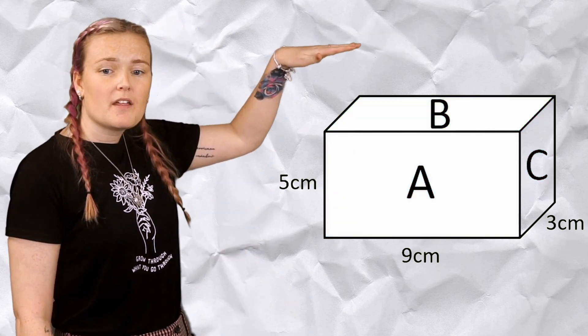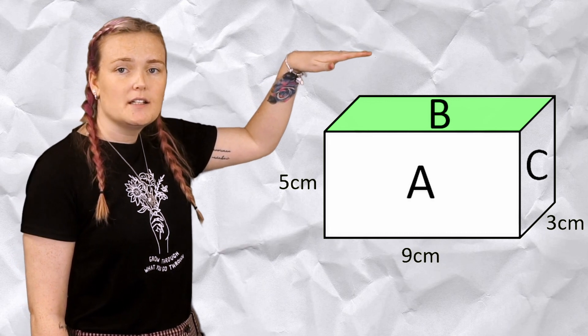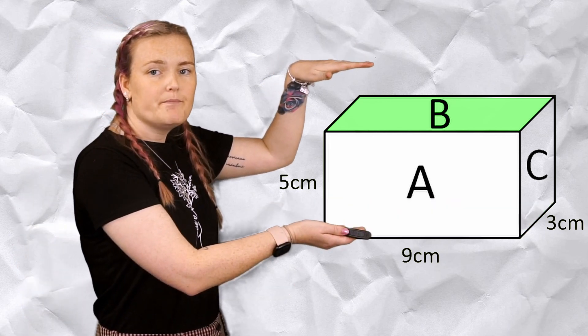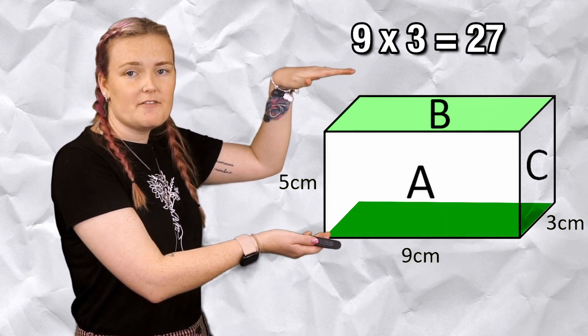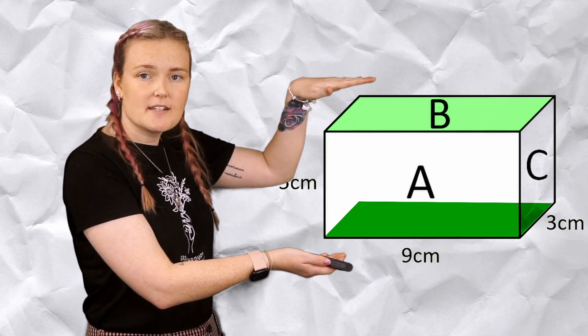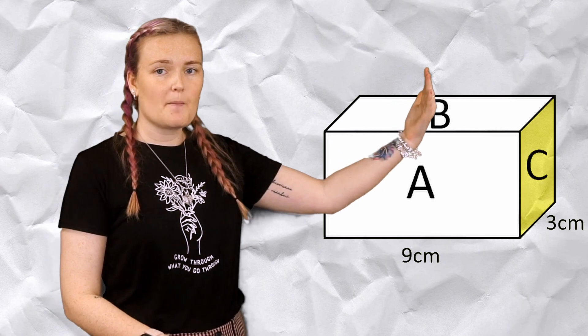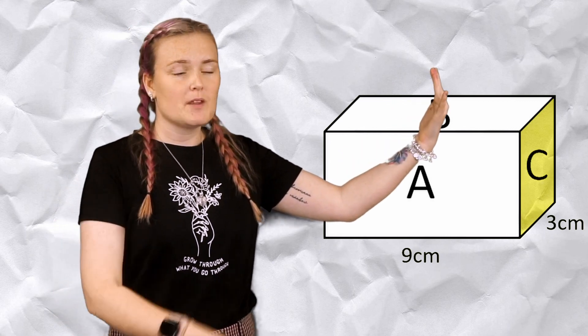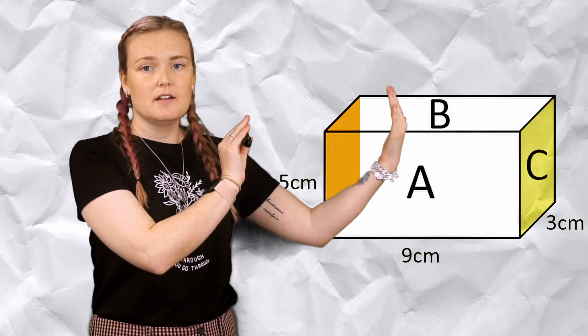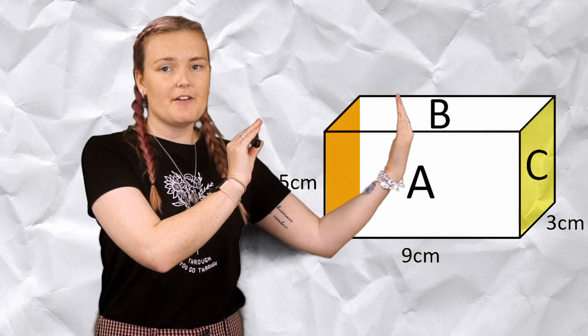Now let's look at the top. That is 9 by 3, but it's also on the bottom. So 9 by 3 is 27 and then I've got it twice so I'm going to double it which is 54. And then let's look at the side. That's 3 by 5 but it's also here as well, so we've got another pair. 3 by 5 is 15, double it is 30.